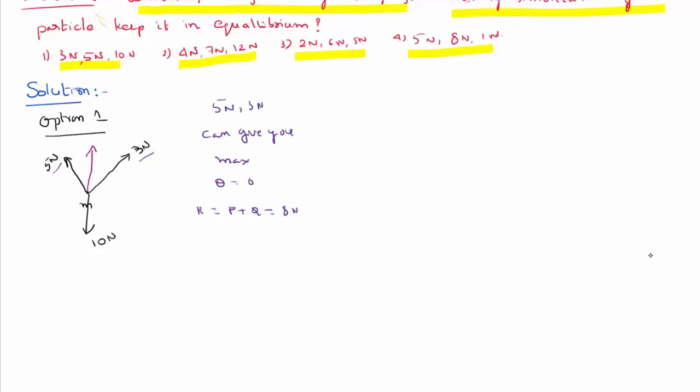So that 8 Newton, assuming angle between them equal to zero, can act this way, whereas the downward force acting is 10 Newton. Therefore, they cannot keep the system in equilibrium.